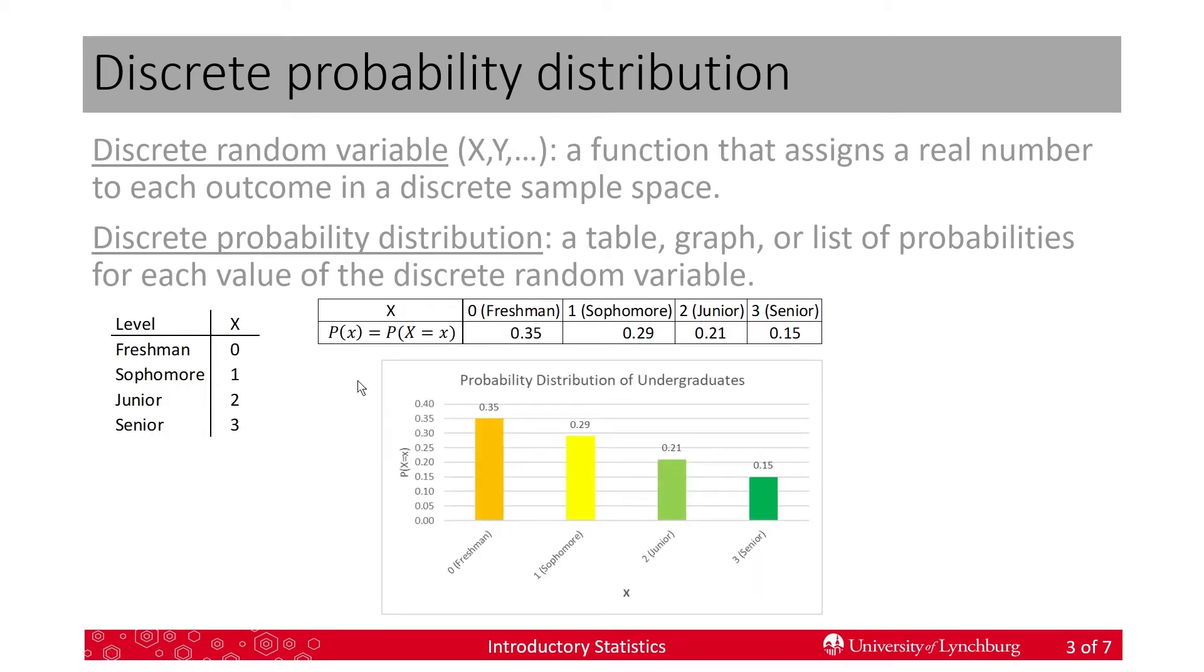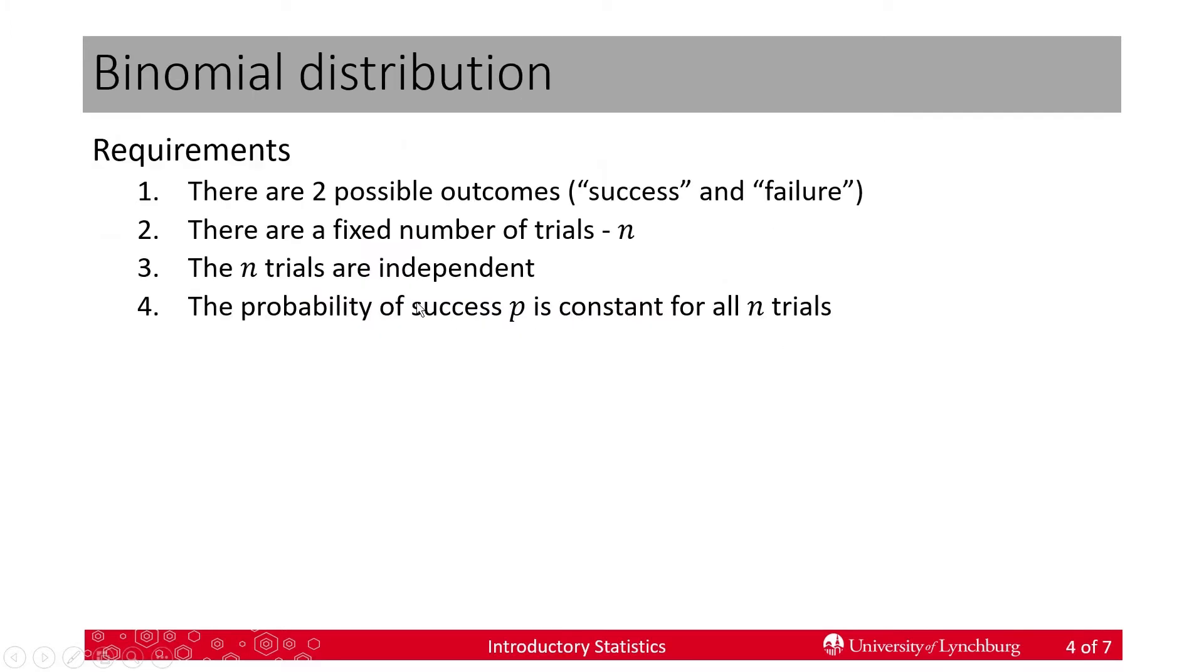Here is the same probability distribution but as a graph. Notice that I have a title. I have an x-axis label and a y-axis label. And then I have labels for each value, 0, 1, 2, 3. I've put the numbers up here so it's very easy to see what these values are. That's what a discrete probability distribution is like.